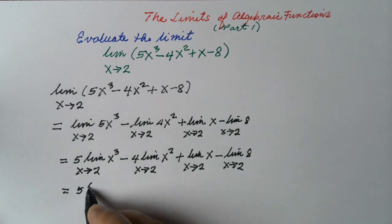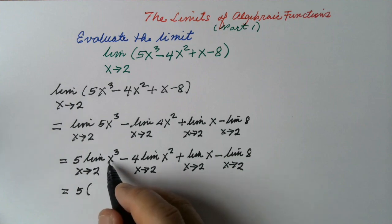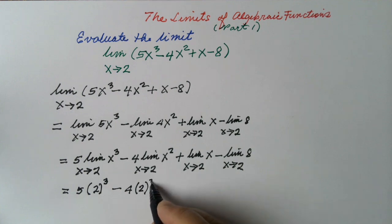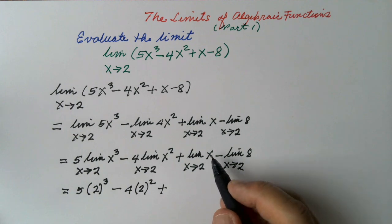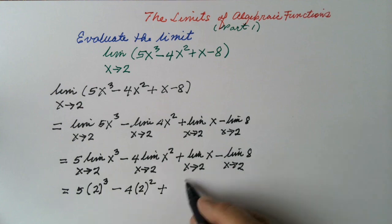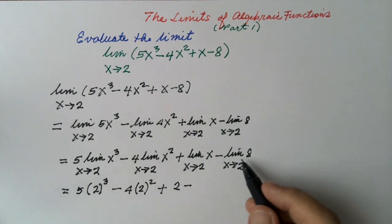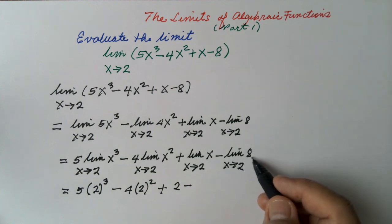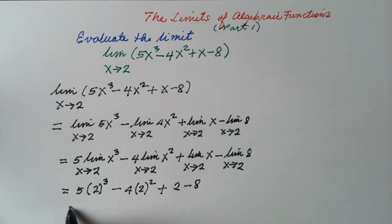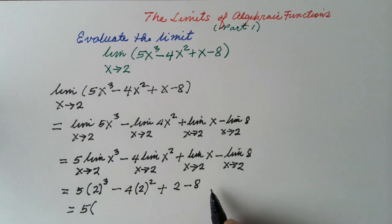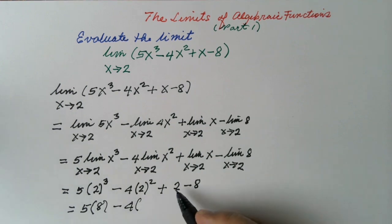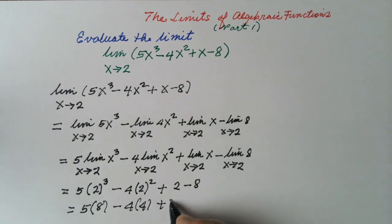So this is 5 times 2 cubed, minus 4 times 2 squared, plus 2, minus 8. 2 cubed is equal to 2 times 2 times 2, which is 8. 2 squared is 2 times 2, which is 4. So we have 5 times 8, minus 4 times 4, plus 2, minus 8.